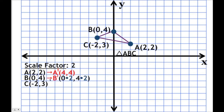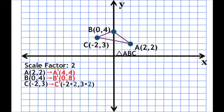How about B? B prime is going to be 0 times 2 and 4 times 2. We're just multiplying by our scale factor. So 0 times 2 is 0, 4 times 2 is 8. So B prime is at (0, 8). How about C? Our scale factor is 2, so we multiply our x-coordinate by 2 and our y-coordinate by 2. C prime is going to have negative 2 multiplied by 2 and 3 multiplied by 2. Negative 2 times 2 is negative 4, and 3 times 2 is 6. So C prime is at (-4, 6).